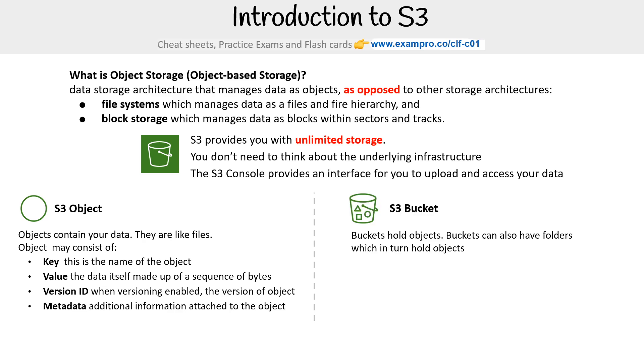Then you have your S3 buckets. Buckets hold objects; buckets can also have folders, which in turn hold objects. S3 is a universal namespace, so bucket names must be unique — it's like having a domain name.